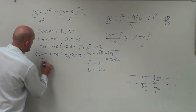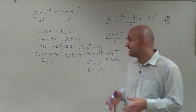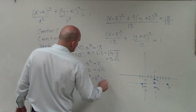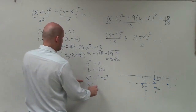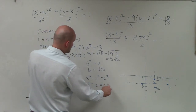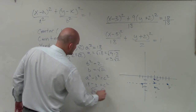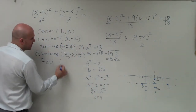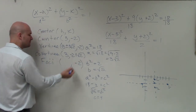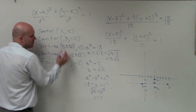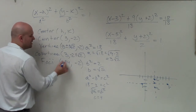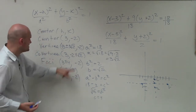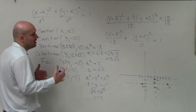Lastly, we need to find the foci. We use the relationship a squared minus b squared equals c squared: 18 minus 2 equals 16, so c squared is 16, meaning c equals 4. Since the foci lie on the major axis, the y-coordinate stays at negative 2. Adding and subtracting 4 from the x-coordinate of the center gives foci at 7, negative 2 and negative 1, negative 2. Notice how the foci, vertices, and center all share the same y-coordinate on the major axis.